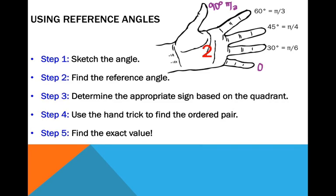When finding exact values of trig functions using the hand trick, the first thing you do is sketch the angle. Step 2 is to find the reference angle. Step 3 is to determine the appropriate sign based on the quadrant. Step 4 is to use the hand trick to find the ordered pair. And step 5 is to find the exact value.